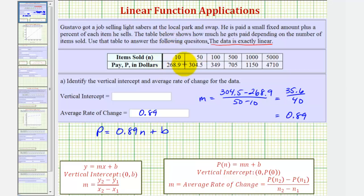It doesn't matter which ordered pair we use since this data is linear. Let's use this first ordered pair. We'll substitute 268.9 for p and 10 for n. This gives us 268.9 equals 0.89 times 10 plus b. So we have 268.9 equals 8.9 plus b. We subtract 8.9 from both sides, and b is equal to 260.